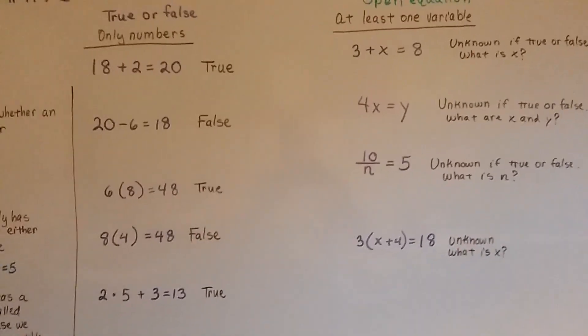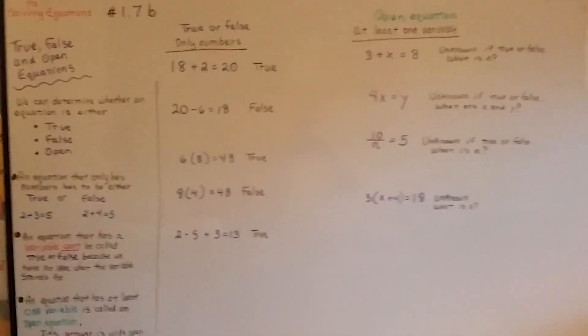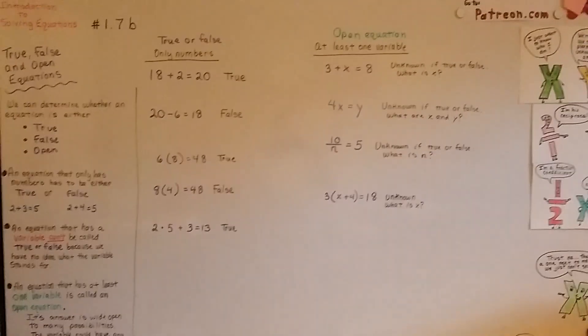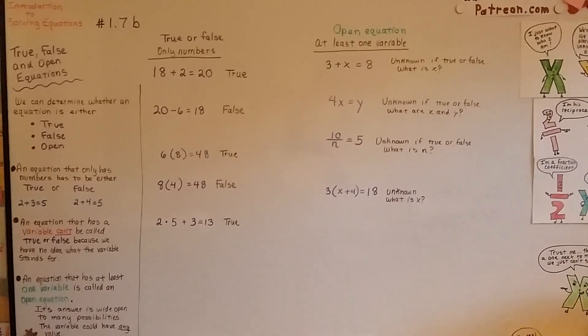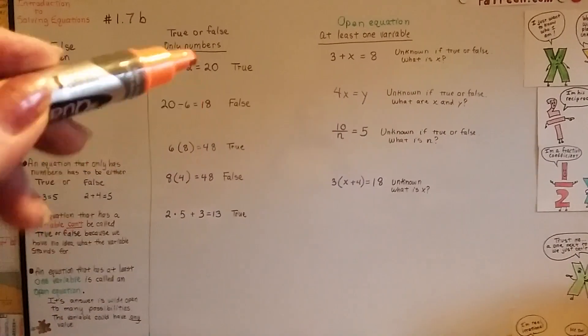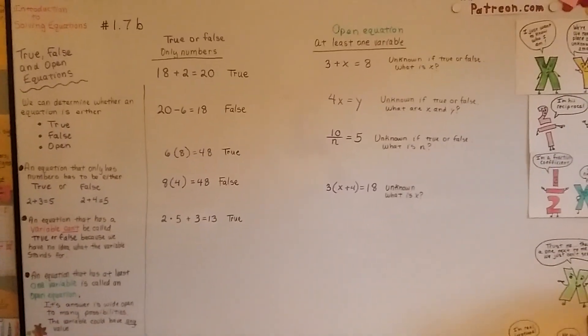So those are true, false, and open equations. Remember, if it's got a variable in it, it can't be true or false. It's unknown, it's open. It's an open equation. If it's got all numbers in it, then it is true or false because we can do the math and find out.